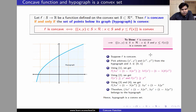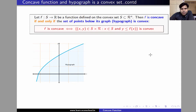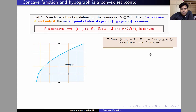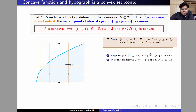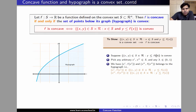Now let us show the converse. To show the converse, we are going to assume that the hypograph is convex and show that f is concave. Suppose the hypograph is convex. In order to show that f is concave, we pick arbitrary points x′ and x″ in the domain and an arbitrary lambda between 0 and 1. Now, (x′, f(x′)) and (x″, f(x″)) both belong to the hypograph.